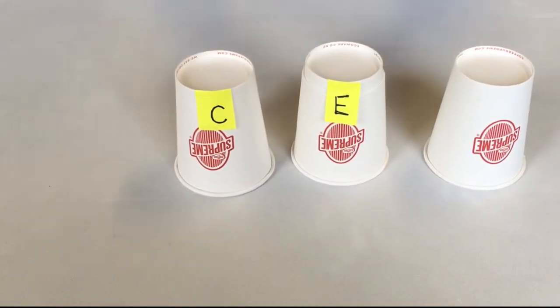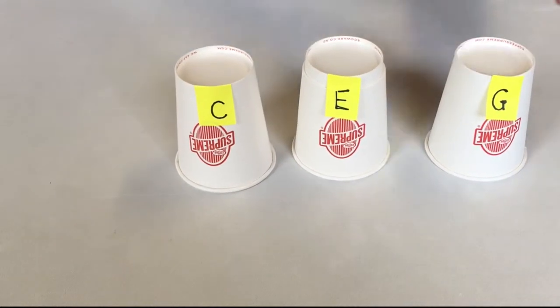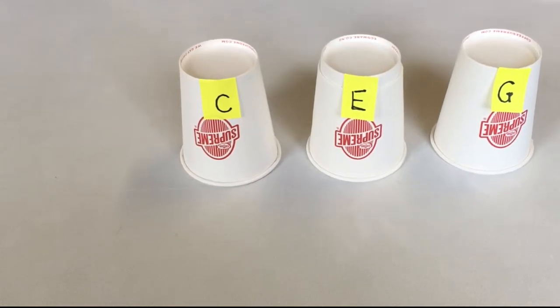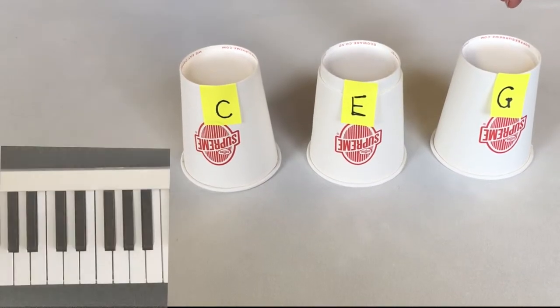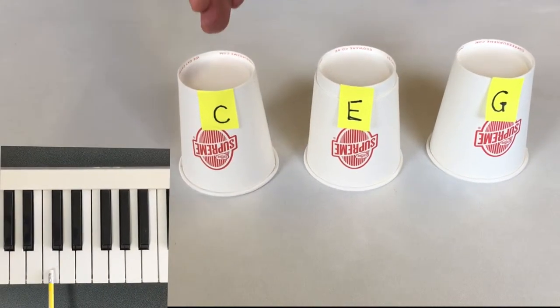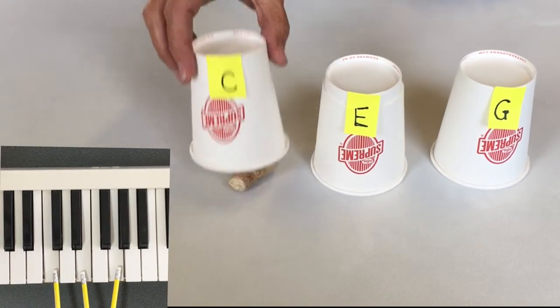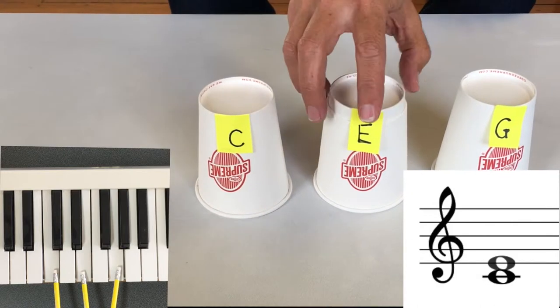So let's start with a common chord, also known as a triad, the chord of C. This chord contains C, E, and G. C is the root, E is the third, and G is the fifth.